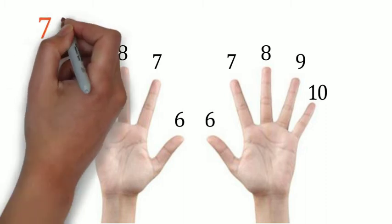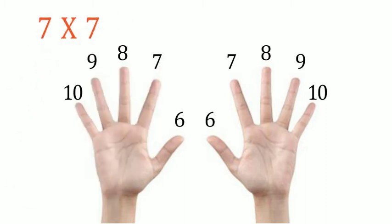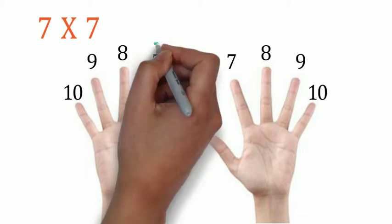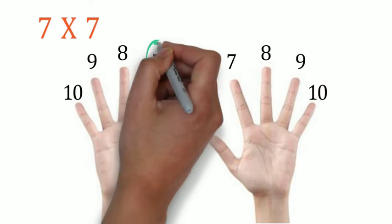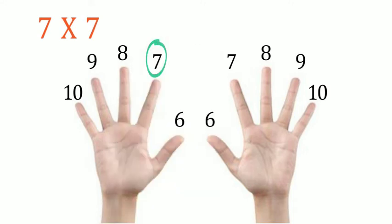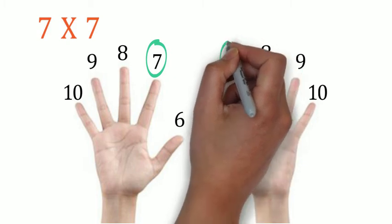Now let's try the first question: seven times seven. What we need to do is, because the first number is seven, we have to search for the finger assigned with number seven in the left hand. The second number is also seven, so we search for the finger assigned with number seven in the right hand.